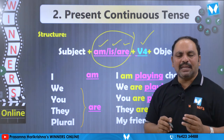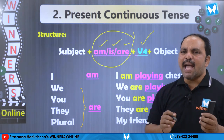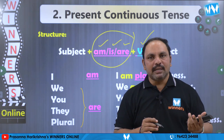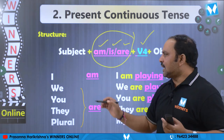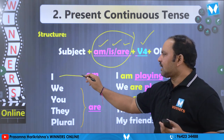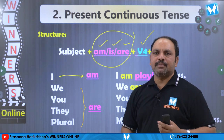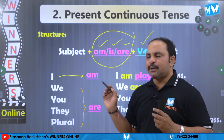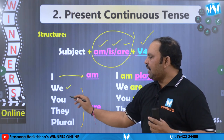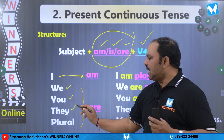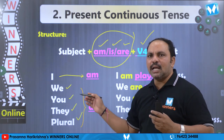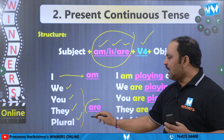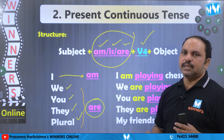Koddiga mundhikki doubt undho chudo. Sir am, is, are ni eppudu ekkada vaadhaali ane tete: subject ga naka 'I' ainatla hai tete am upayoginchandi. Subject 'we', 'you', 'they' plural hai tete are antaamu. Are aneetivaan tete verb unni upayoginchandi.